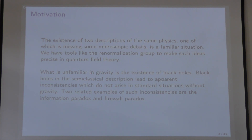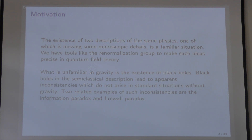Now, the existence of two descriptions of the same physics, one of which is missing a few microscopic details, is a familiar situation in physics. We have tools like the renormalization group to make such ideas precise in quantum field theory. What's unfamiliar in gravity is the existence of black holes. Black holes in the semi-classical description give rise to apparent inconsistencies, which do not arise in standard situations without gravity.